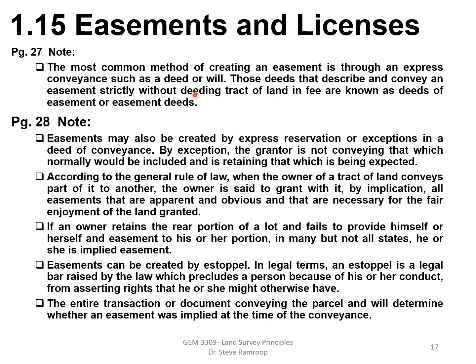Continuing on page 27, the most common method of creating an easement is through an express conveyance such as a deed or will. Deeds that describe and convey an easement strictly — without a deed and tract of land in fee — are known as deeds of easement or easement deeds. Easements may also be created by express reservations or exceptions in a deed of conveyance. By exception, the grantor is not conveying that which normally would be included and is retaining that which has been excepted.